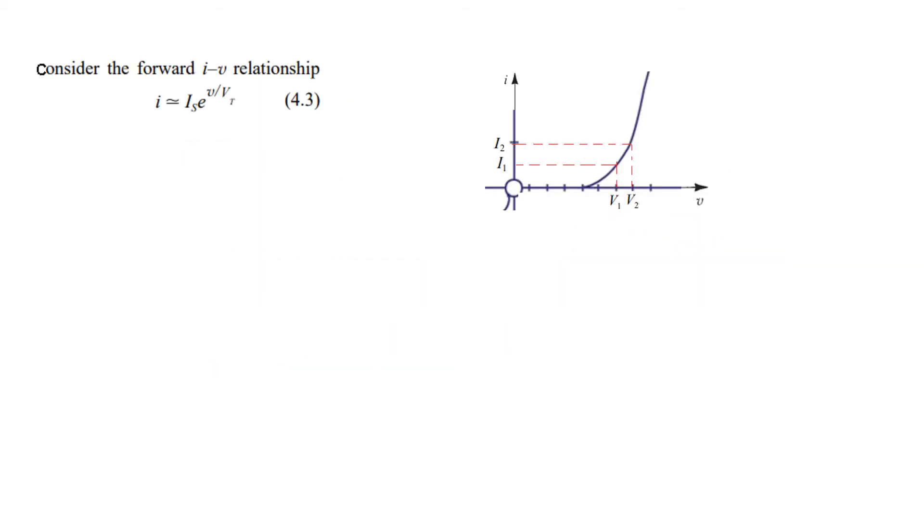Now we will derive the relation. This was the equation that we found out. And from here we will apply this equation onto this diagram. So we can say that for voltage V1 the diode current will be I1. And rest everything is similar. This V will be changed with V1. And similarly we get an equation for V2.